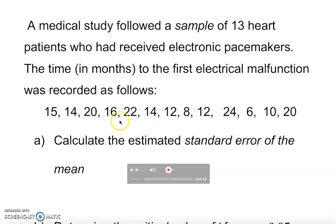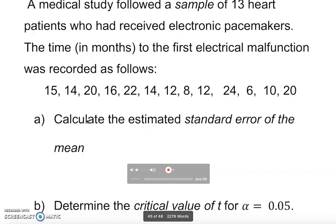Now the question is asking us to calculate the estimated standard error of the mean. How do you do that? We have a formula for this. The formula is s sub M equals s over square root of n.